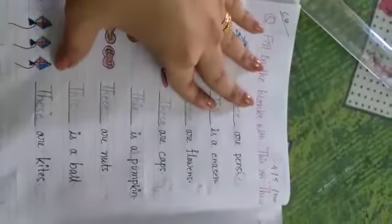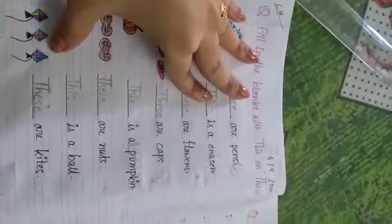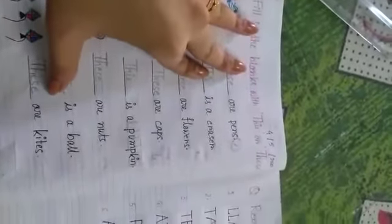And the last one is kites. How many kites? 1, 2, 3, 3 kites. That means we will write here THESE. These are kites.